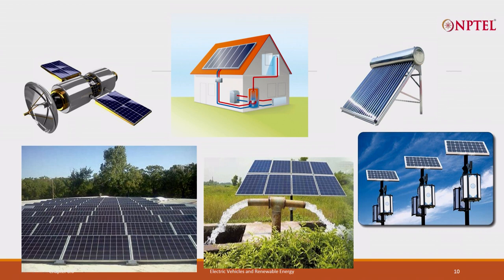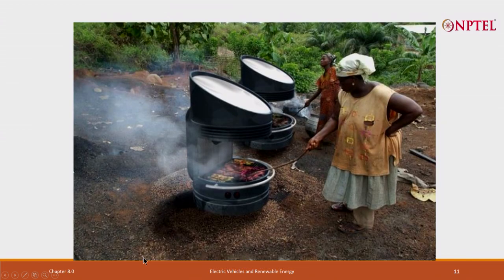Today solar panels are available in all kinds of configurations. They are used in rockets, rural homes, street lights, water pumps, and residences. Panels are foldable and widely deployed. There is also an interesting application where a concentrated solar lens is used with a solar panel for cooking in Africa.